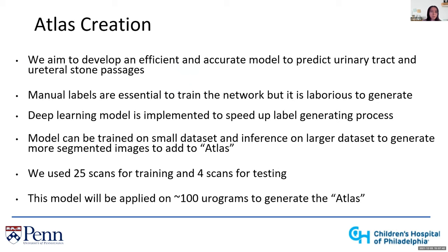The atlas creation is still the data creation step. We aim to develop an efficient, accurate model to predict the urinary tract and ureteral stone passages. Generating accurate kidney, ureter, and bladder segmentations is essential, but manual labeling is laborious. So we use a deep learning model to speed up label generation — trained on a small dataset and run on a larger dataset to generate rough segmentations, which are sent to the urologist to manually correct. Those corrected labels are added to the atlas. We use 25 scans for training, 4 for testing, and have an additional 100 urograms to pass through the model.